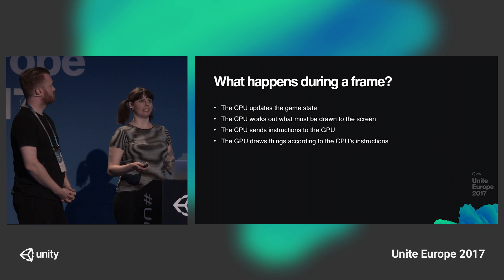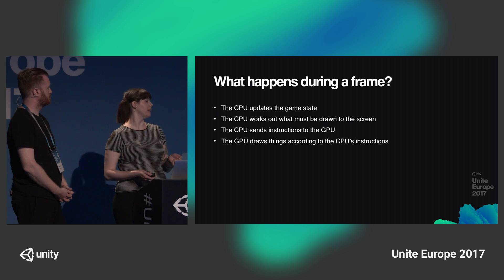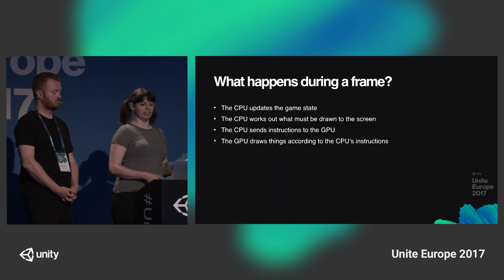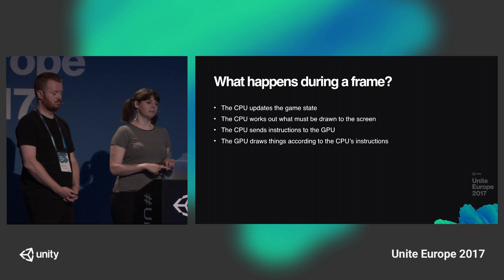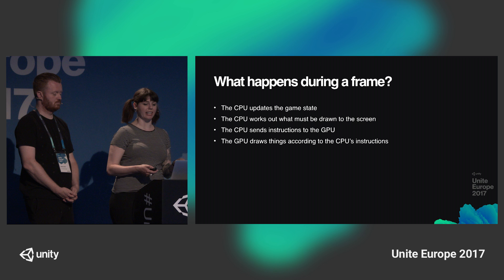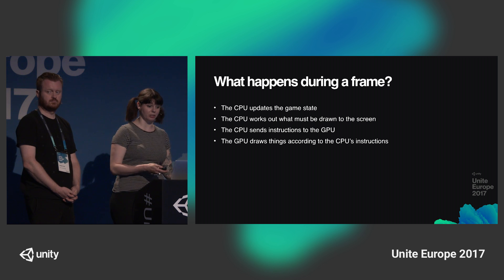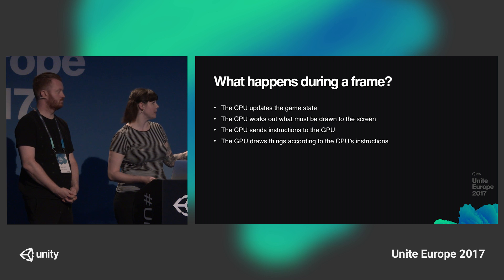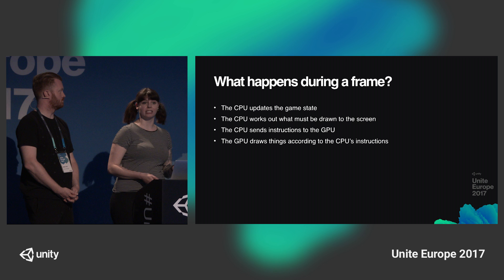We're going to take a quick look at what happens during a frame. Every time a frame is rendered, Unity performs a whole bunch of different tasks. The central processing unit, the CPU, updates the game state — this means reading user inputs, executing scripts, performing calculations, and so on. Some core Unity engine stuff happens at this point too. Once the state has been updated, the CPU works out what's going to be drawn to the screen, including things like what can currently be seen by a camera and where to draw the shadows. The CPU then sends instructions about what to draw to the graphics processing unit, the GPU. And then finally, the GPU draws things according to those instructions.